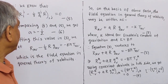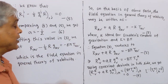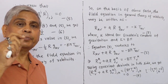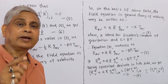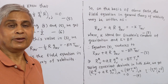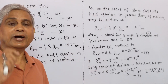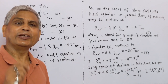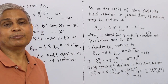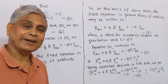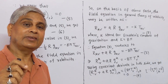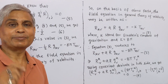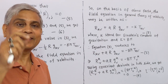Therefore we come to the conclusion that how Einstein thought to frame the field equation in general theory of relativity from the idea of the field equation in classical mechanics. Thanks for watching. If you are satisfied with my presentation and the contents, please click the like button and subscribe to my YouTube channel. Thank you.